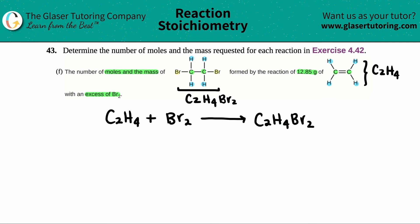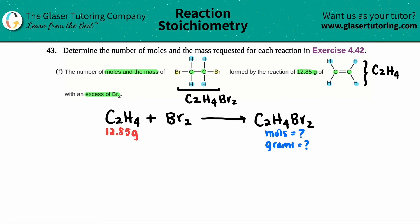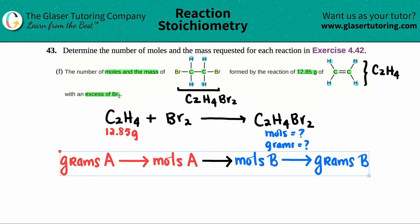I'll write the starting information under the relevant compound. They told me I have 12.85 grams of C₂H₄, so I'll note that under C₂H₄. The question asks for the moles and the grams of C₂H₄Br₂. You can clearly see this question gives information on one compound and asks for information on another — this is stoichiometry, and it proceeds as a series of ratios.